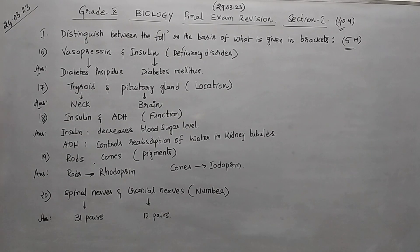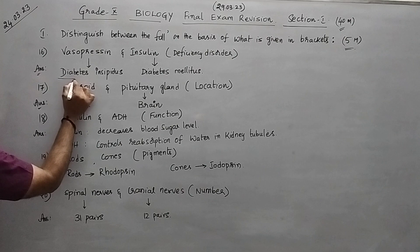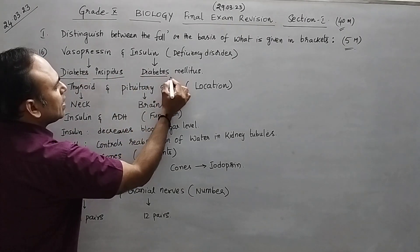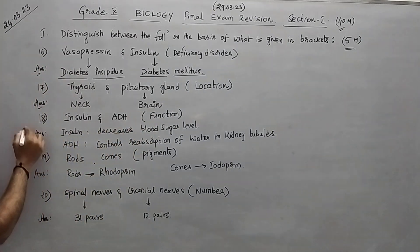Next, question number sixteen. Vasopressin and insulin - what are the deficiency disorders? Vasopressin deficiency causes diabetes insipidus, and insulin deficiency causes diabetes mellitus.